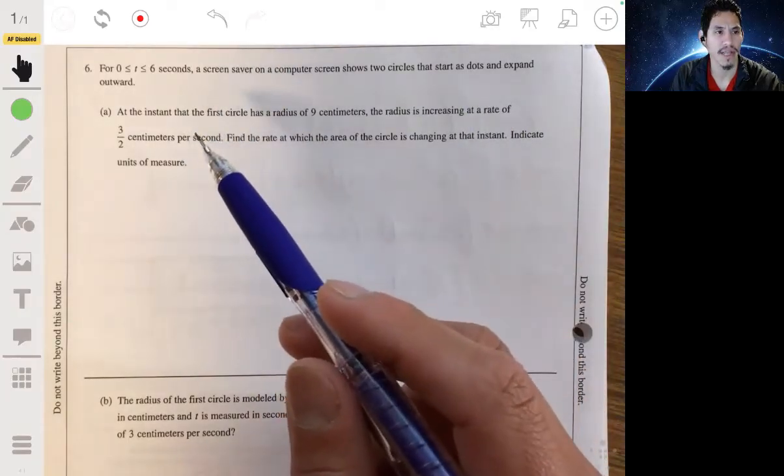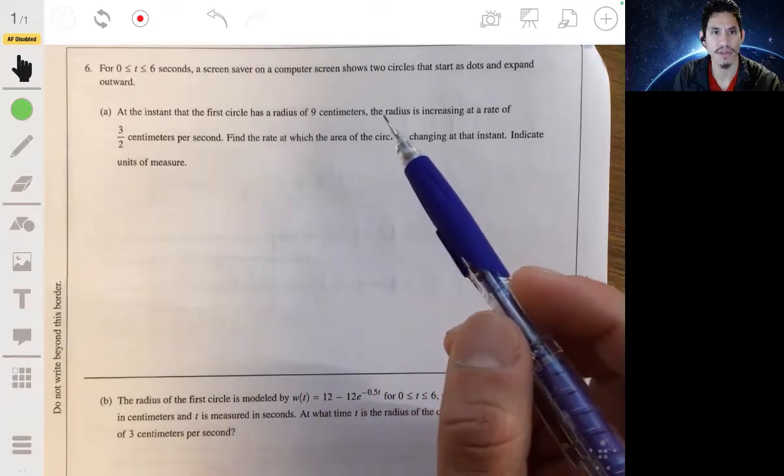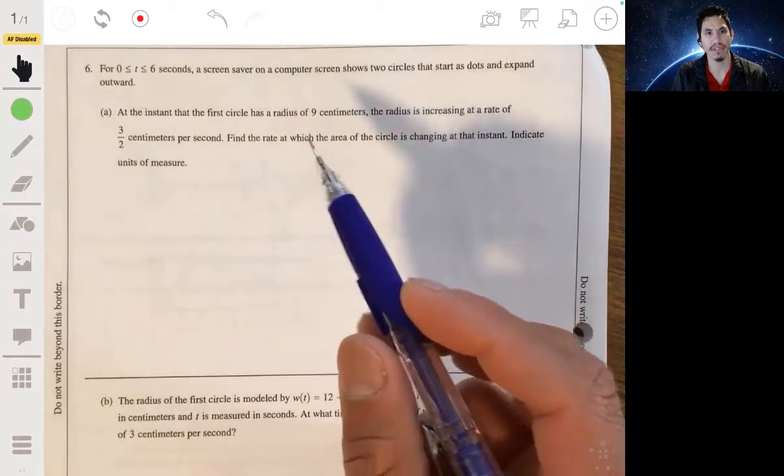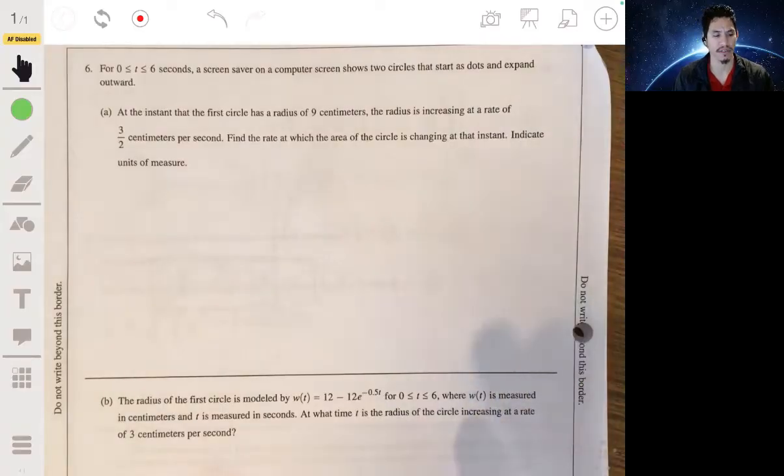Part A: we have that at the instant that the first circle has a radius of nine centimeters, the radius is increasing at a rate of three halves centimeters per second. Find the rate at which the area of the circle is changing at that instant and indicate units of measure.